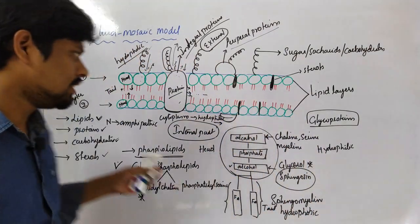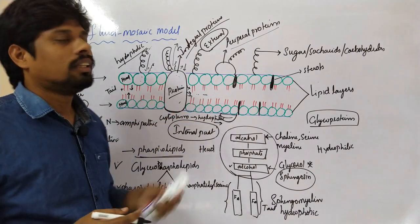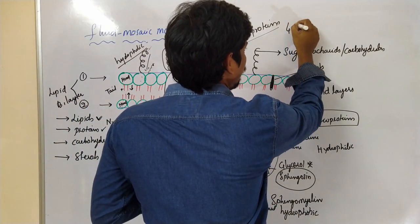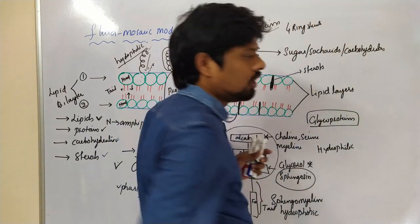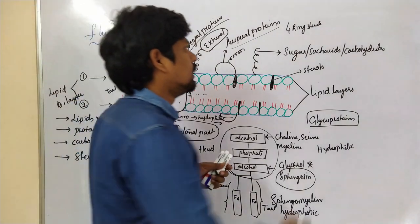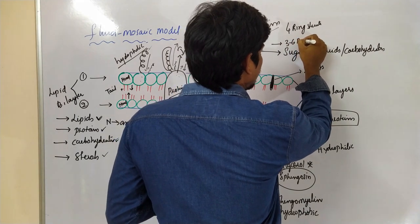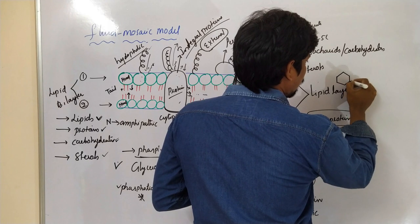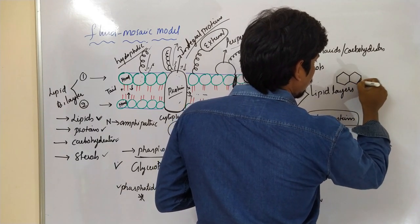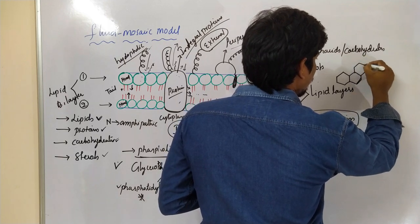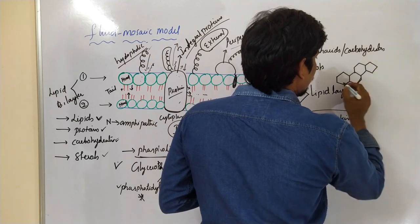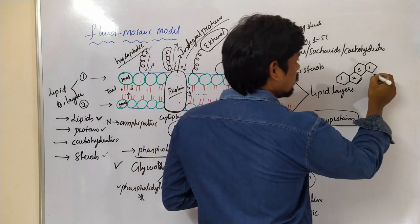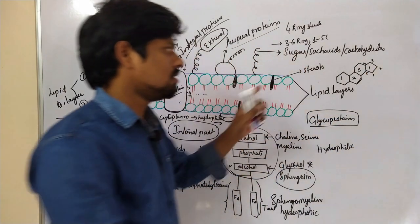Coming to sterols — they are present in very small amounts in the plasma membrane. Sterols contain four ring structures: three are six-carbon rings and one is a five-carbon ring.